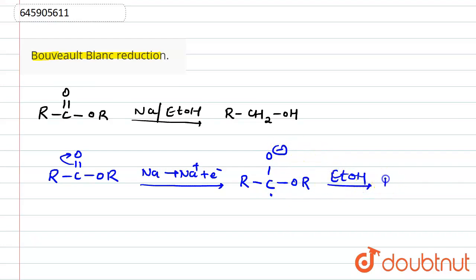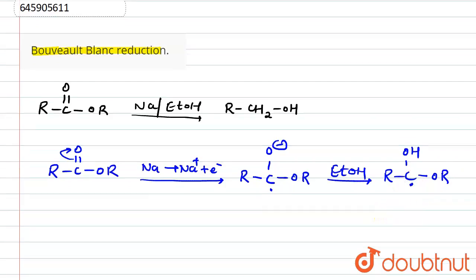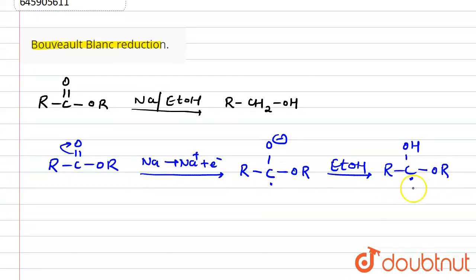After that, from EtOH, a hydrogen is donated and it converts into an OH group. Now we have the ester intermediate with a radical present on carbon.